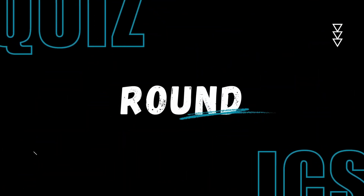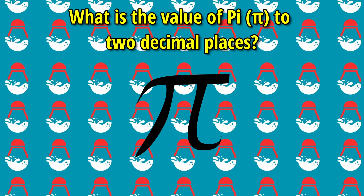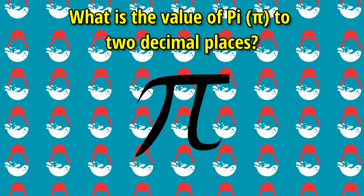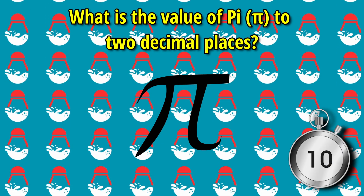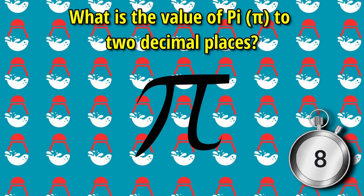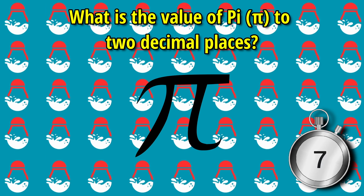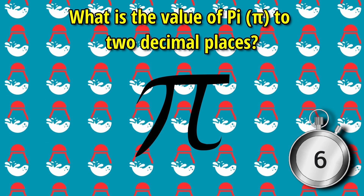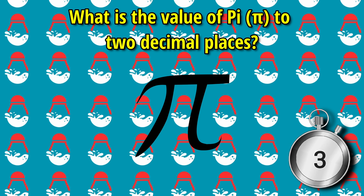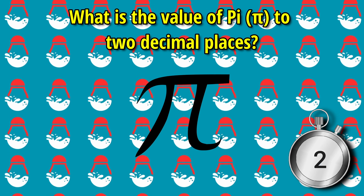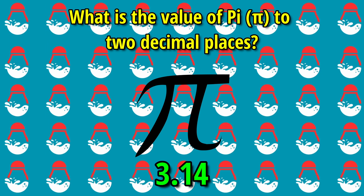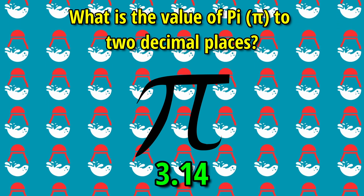Warm-up round. What is the value of pi to two decimal places? The answer is 3.14.